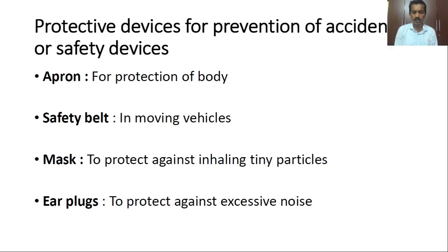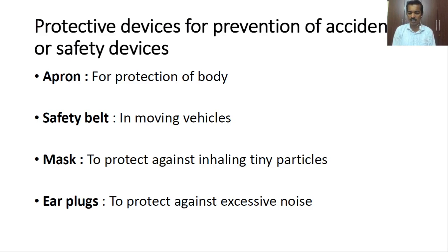Aprons are provided for protection of the body. Safety belts are especially required for moving vehicles — even in automobiles while driving — and in industries for dangerous work. To protect the face or prevent inhaling tiny particles, masks are provided. In work areas with excessive noise, ear plugs are provided as protection.